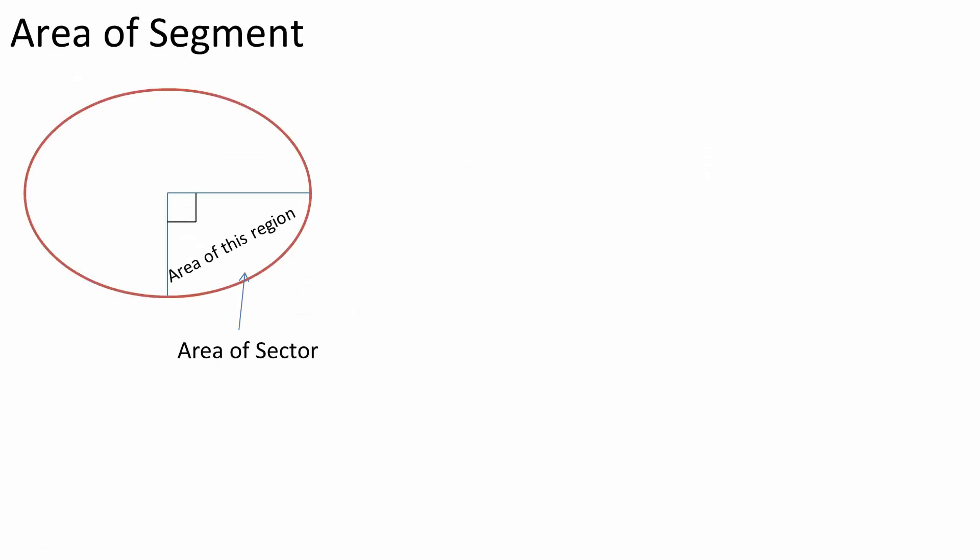So in understanding what is the area of the segment, we need to go over a few things. So the area of a sector is the whole area right here, this piece right here. Now if I draw a line from here all the way to this point is a simple triangle.